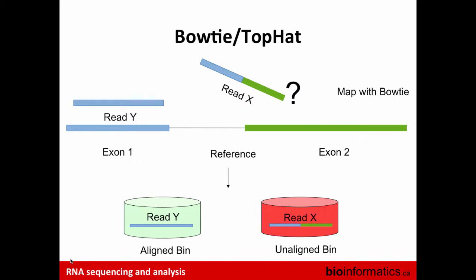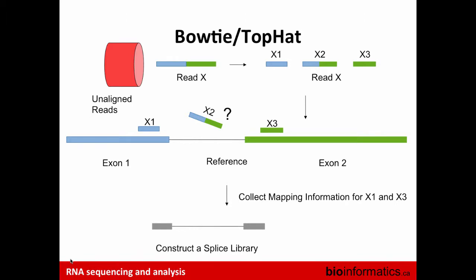In the first pass, Bowtie tries to align each read against the reference. Read Y maps perfectly to exon 1 since it spans only one exon. However, for read X, half the read belongs to exon 2 and the other half to exon 1, but the reference has an intronic region in between, so it cannot map. It throws read X into an unaligned bin, then takes all unaligned reads, breaks them into smaller chunks, and re-aligns each chunk to the whole genome reference.